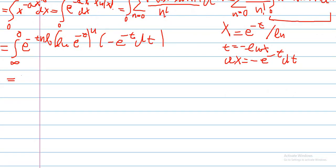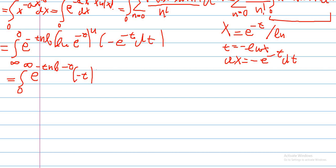We use the minus to flip the boundaries, so we have an integral from 0 to infinity. We multiply e to the negative t, giving e to the negative t(nb plus 1), and ln of e to the negative t is just negative t, so we get (negative t) to the power of n, dt.